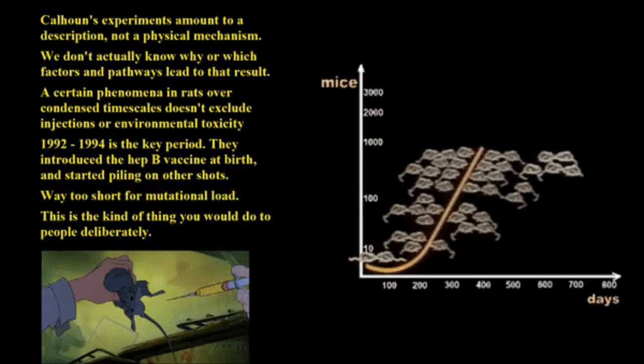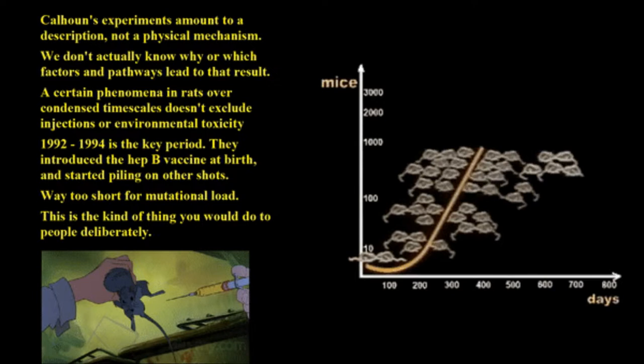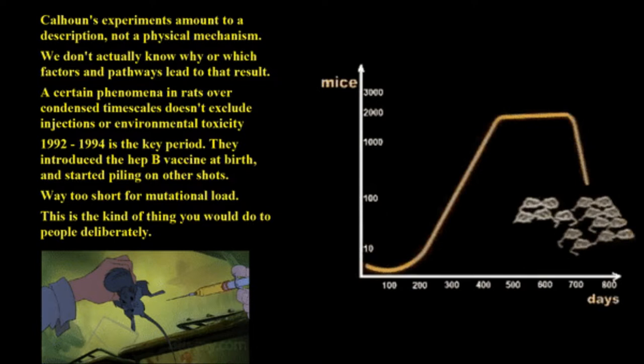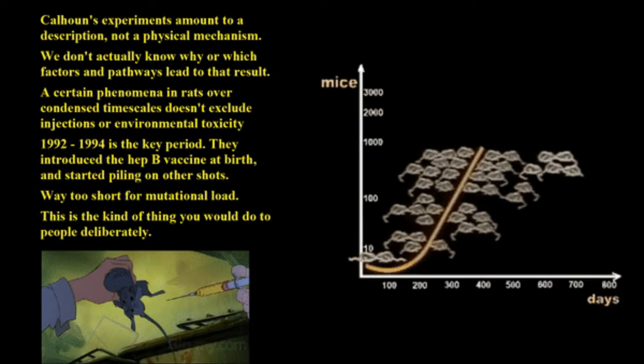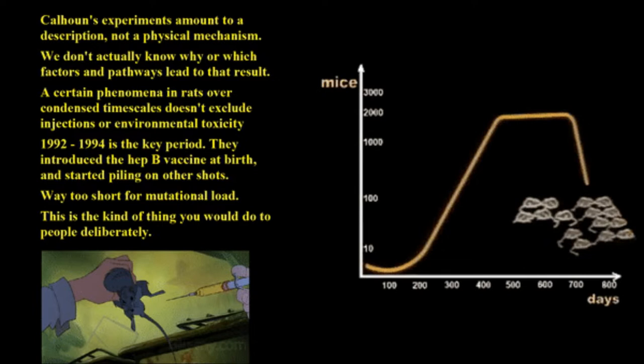He says 92 to 94 is the key period — they introduced the hepatitis B vaccine at birth and started piling on other shots. Well, they had shots all the way to at least the 1950s. I received my shots in school in the 60s, so I don't think they started in the 90s.